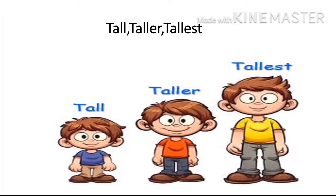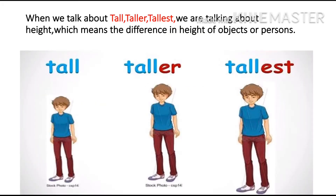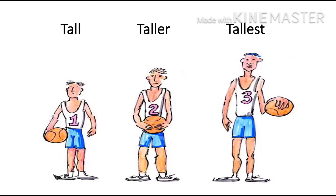Now let's start with the next concept of tall, taller and tallest. When we talk about tall, taller and tallest, we are talking about height, which means the difference in the height of objects or person. Now in the first image it is tall, the middle one is taller, and the last one is the tallest. Now children, see this image of basketball players to understand the concept of tall, taller and tallest in a much better way.